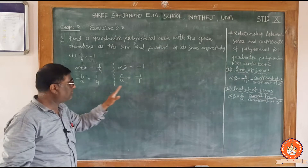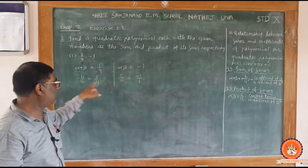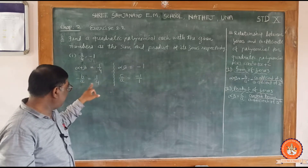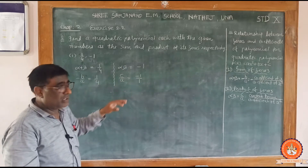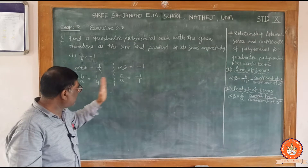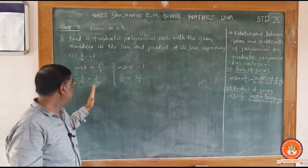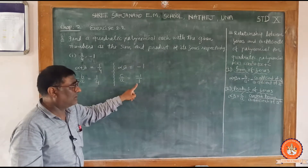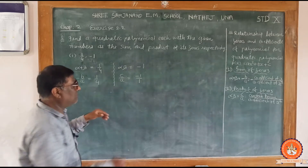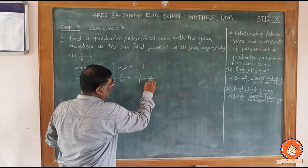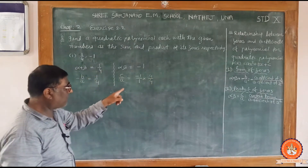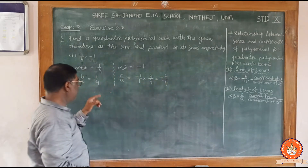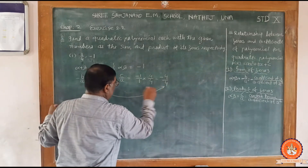Compare these two: a is the denominator in both cases. The digit against a is 4 here and 1 there. In both cases, the number against a must be the same. Here it is 4, here it is 1, so we multiply minus 1 upon 1 by 4 upon 4 to get the denominator as 4, giving minus 4 upon 4.